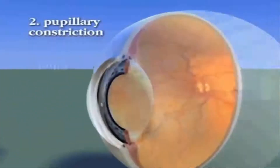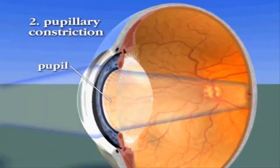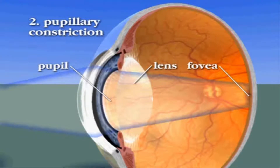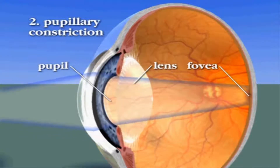Second, the pupil must constrict to restrict the entry of light rays diverging from a near object, since diverging rays cannot be bent enough by the periphery of the lens to make them fall on the fovea. If the pupil were to remain dilated, the image would be blurred.